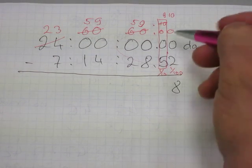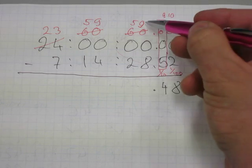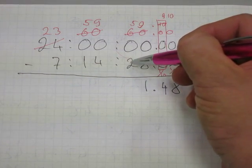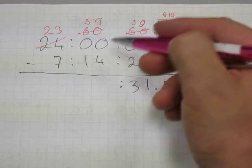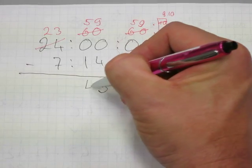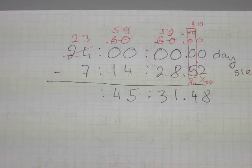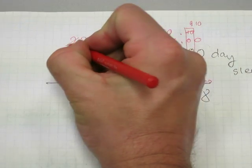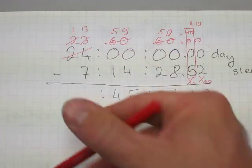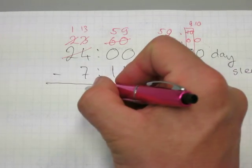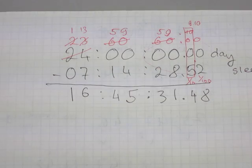10 take away 2 is 8; 9 minus 5 is 4; decimal dot; 9 take away 8 is 1; 5 subtract 2 is 3. Next column: 9 take away 4 is 5; 5 minus 1 is 4. For the seconds ones digit: 3 minus 7 won't work, so trade from the tens — borrow 1, making 13 take away 7 is 6, and the tens digit becomes 0. One take away nothing is 1.